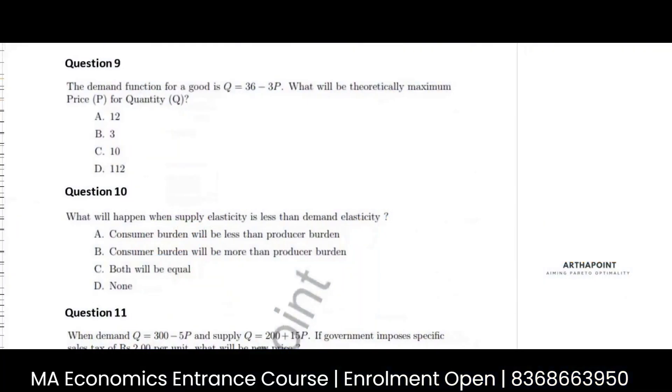So, the demand function for a good is given as Q is equal to 36 minus 3P. What will be the maximum price for quantity? Again, put maximum price for quantity Q.